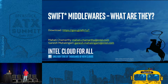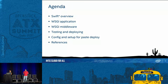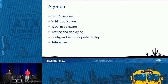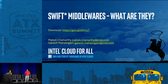Today we're going to talk about middlewares. Here's the agenda: we're going to have an overview of Swift, talk about WSGI applications, WSGI middleware, see a sample middleware and sample application, a sample test for it, the configuration and setup needed, and some references you could look at. You can also download the slides from the Dropbox link given here and at the end of the slides.